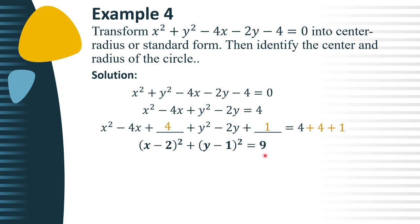So, this is now the standard equation of the circle. So, we can now identify the center and the radius of the circle. So, by inspection, we have h equals positive 2 and k equals to positive 1. Right? So, therefore, the center of the circle is at 2 comma positive 1.